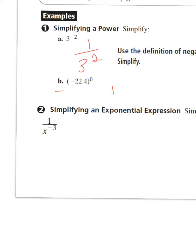Now notice in example 2, we have a negative exponent in the denominator. So again, that's going to give us the reciprocal. So in this case, with the negative exponent there, that x to the negative 3 comes up in the numerator and becomes x to the positive 3.